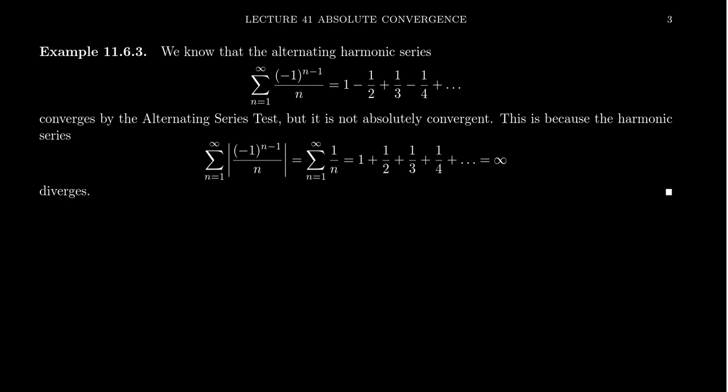Take for example the alternating harmonic series. We've seen this one before when we talked about the alternating series test. It goes 1 minus 1/2 plus 1/3 minus 1/4, etc. If we take the absolute series, we get the harmonic series, which we know is divergent.